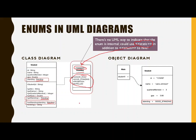One thing you do have to pay attention to is null. These references will be null by default, and you can pass in null as a parameter. So you still do want to do a precondition check to look for nulls, because that is something that can happen with an enumerated type. It could be one of those four things, but it could also be null, and you probably want to guard against that.